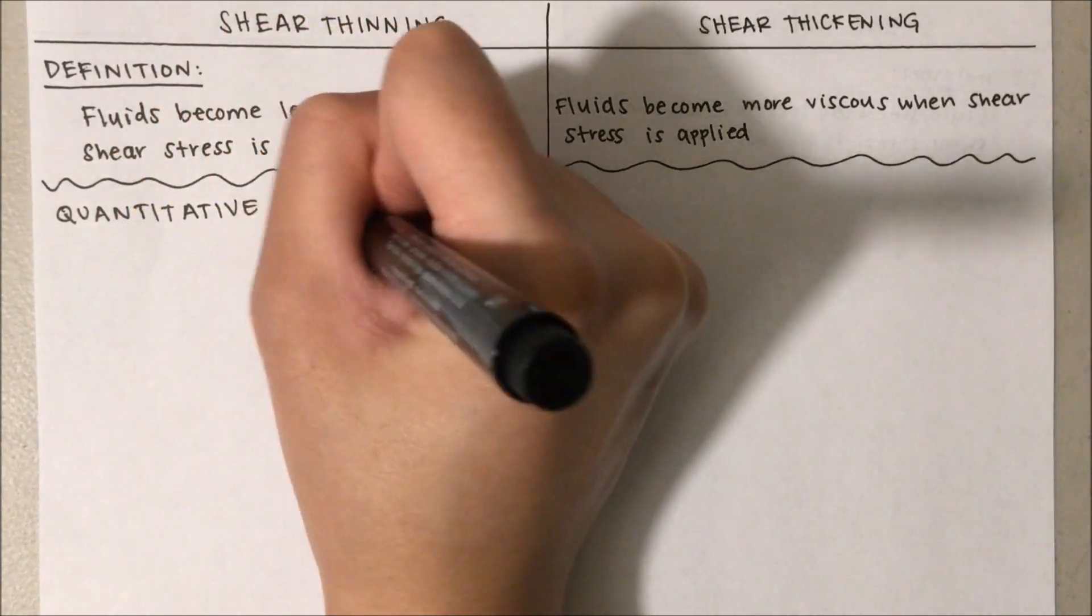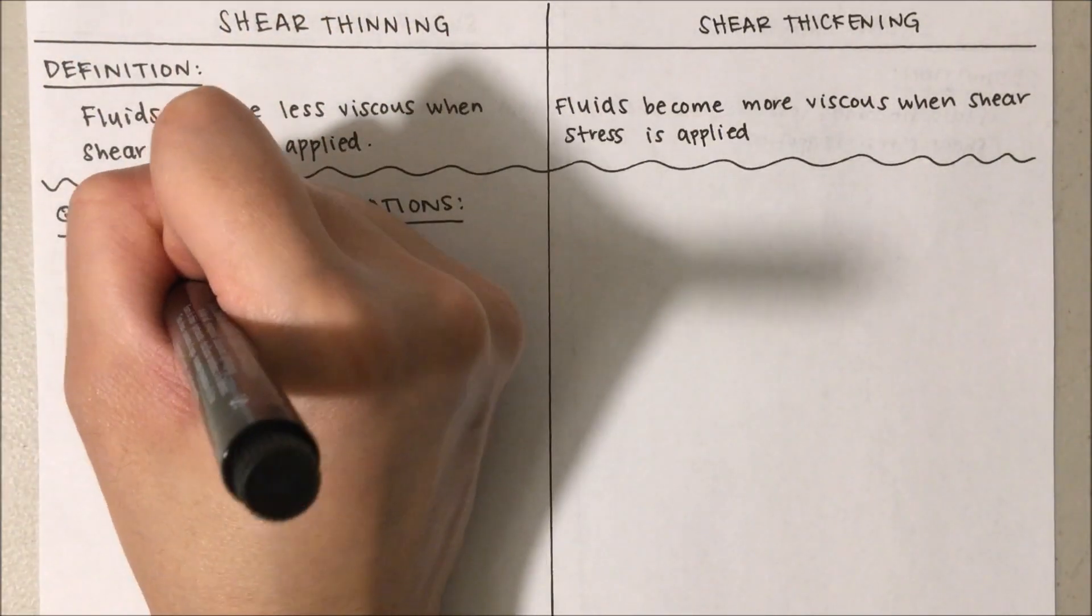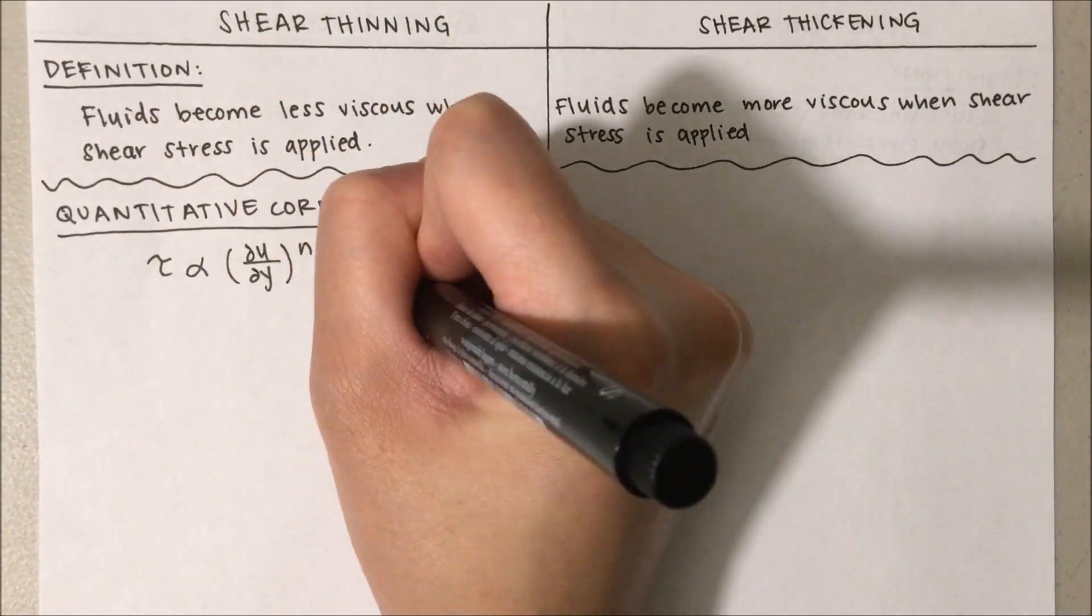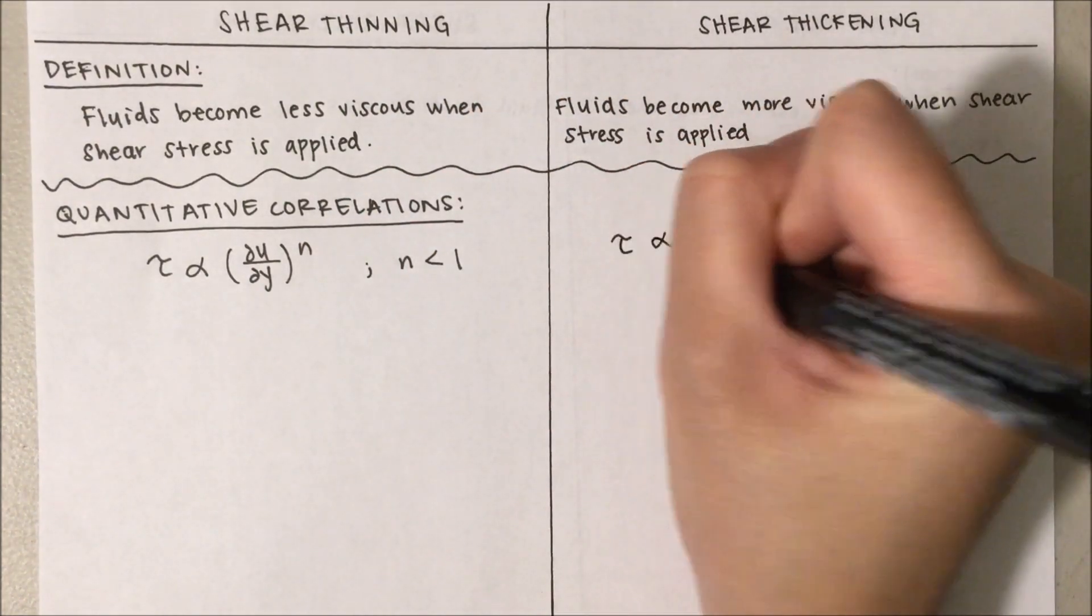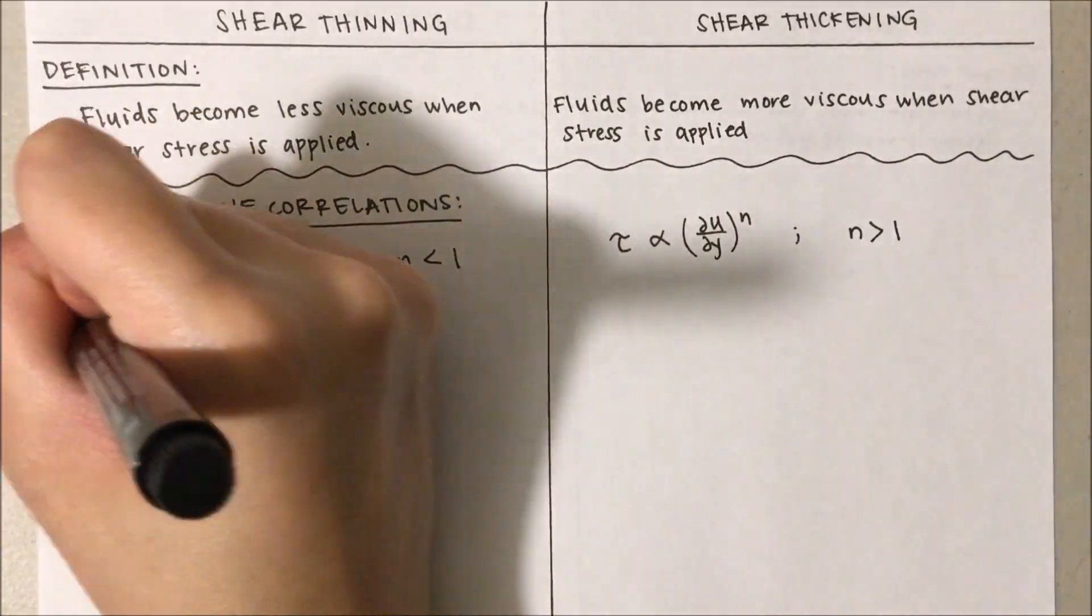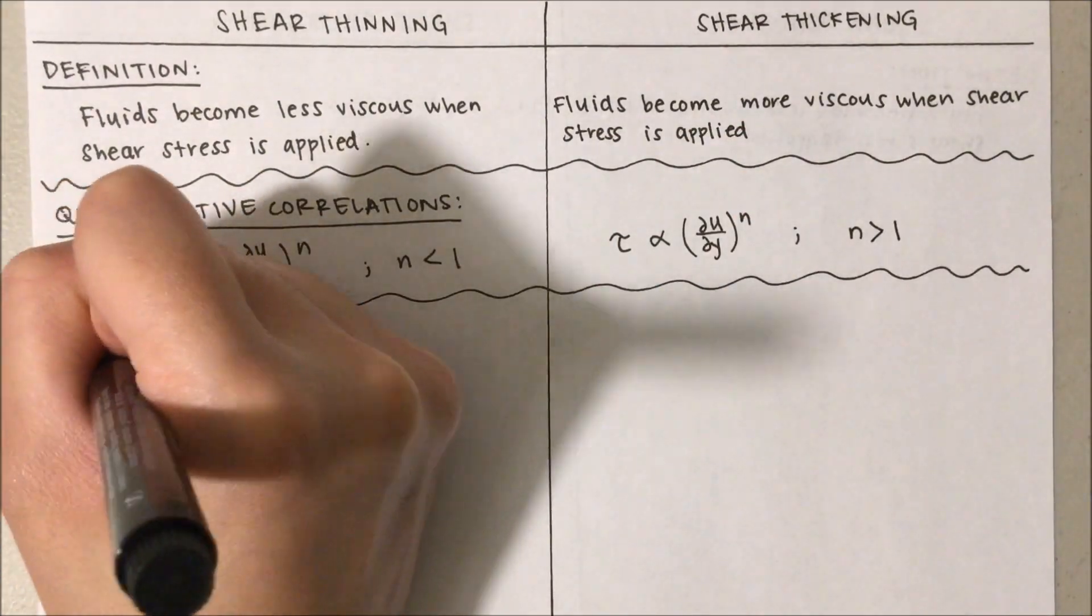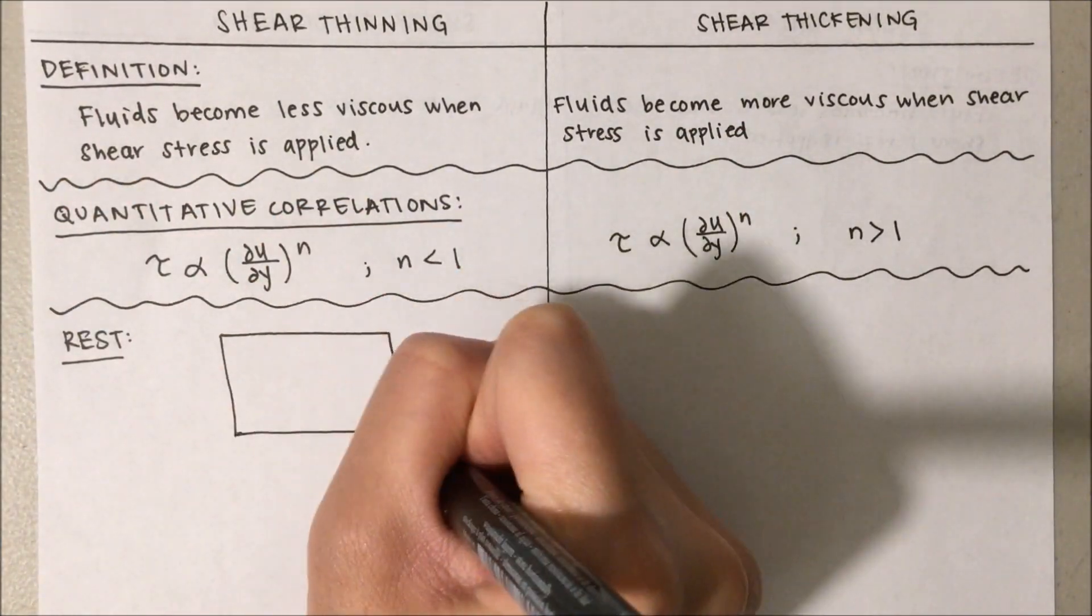Quantitatively, for shear thinning fluids, its shear stress is proportional to its shear rate to the nth power where n is always less than 1. Shear thickening fluids have the same proportional relation, but n is always greater than 1. Now, let's take a look at the microscopic view.